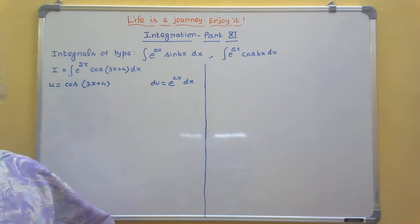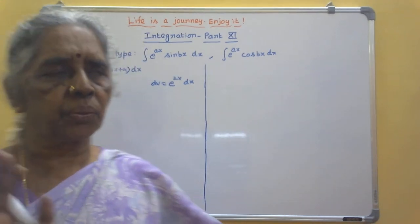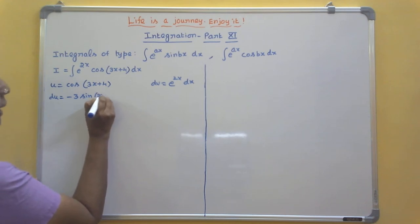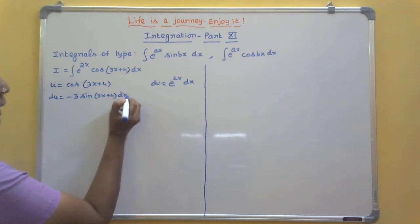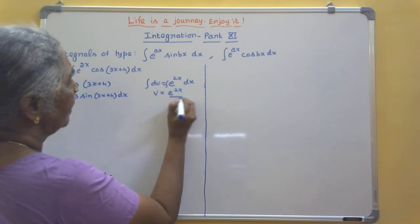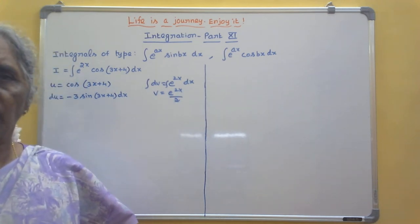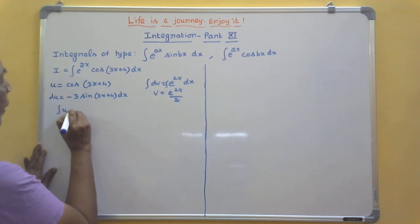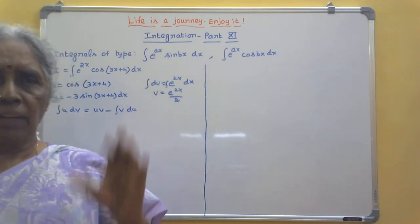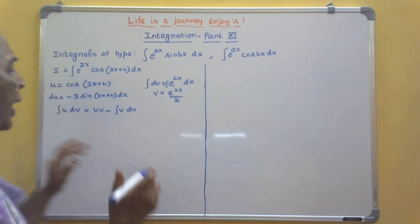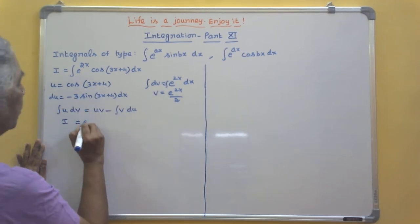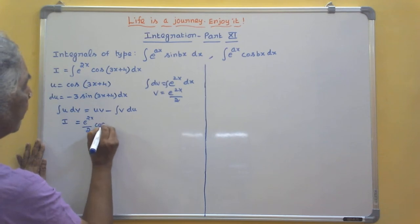As usual, differentiate the u function and integrate the dv function. So you will get du equal to minus 3 sin(3x + 4) dx. If you integrate dv, you get v equal to e^(2x) by 2. Now write the formula for integration by parts: integral u dv equals uv minus integral v du. The left hand side will always be I, so write I equals uv.